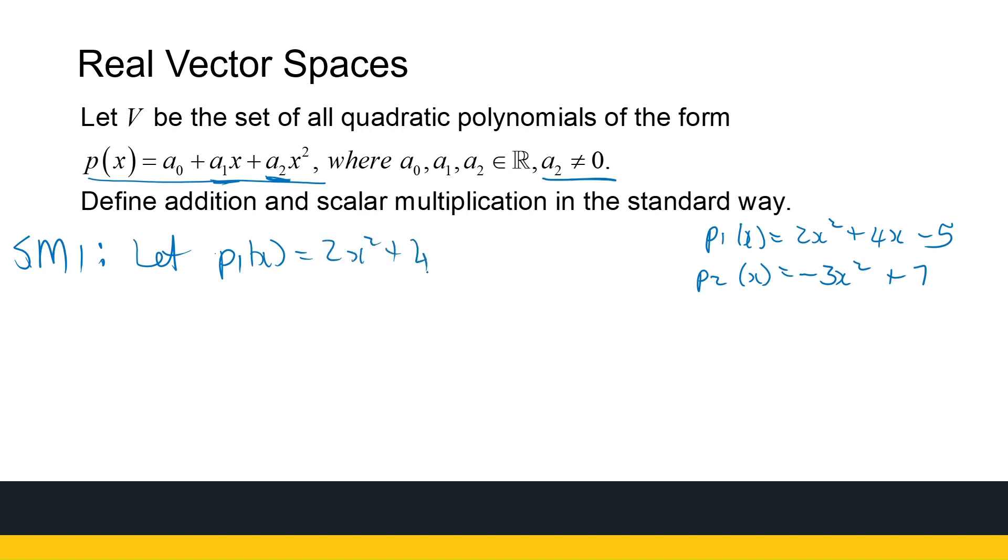I can say, let p1 of x be equal to, let's do the same p1, 2x squared plus 4x minus 5, and let p3, because I've already got a p1, let p3 be minus 2x squared plus 5. Well then, p1(x) plus p3(x), if I add them together, these terms are going to cancel out. I'm going to end up with 4x. 4x is not a quadratic polynomial, so it's not in the set V.